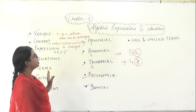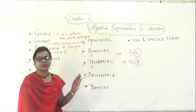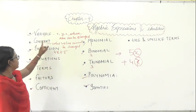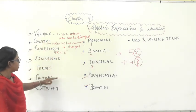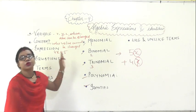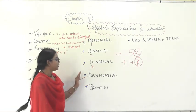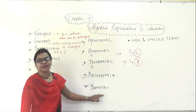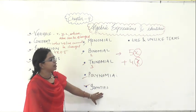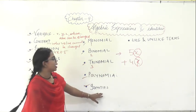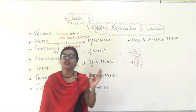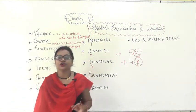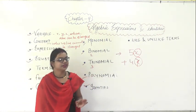This was the introduction to Chapter 9, Algebraic Expressions and Identities. We studied variable, constant, expression, equation, terms, factors, coefficient, monomial, binomial, trinomial, and polynomial. We also covered the basic identities useful while solving this chapter, and what are like and unlike terms. Go through this video and prepare your notes. Thank you.